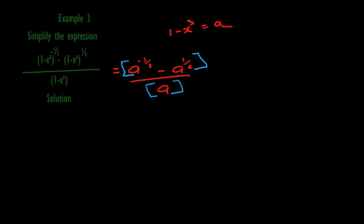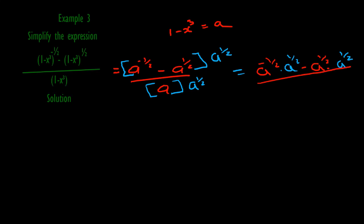To simplify a raised to negative a half and a raised to power half further, we multiply both the numerator and denominator by a raised to power half. The term outside the bracket multiplies all the terms inside. In the numerator: the first term is a^(-1/2) times a^(1/2), minus the second term a^(1/2) times a^(1/2). In the denominator, inside the bracket we have a, and outside the bracket we have a raised to power half.